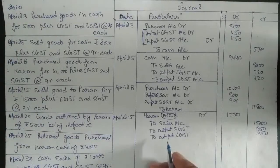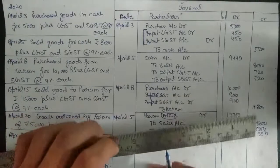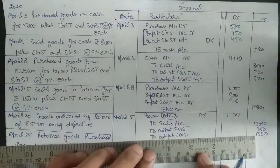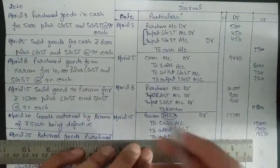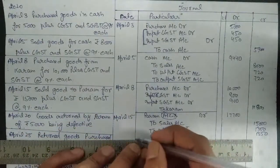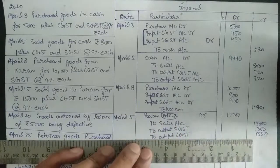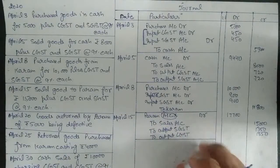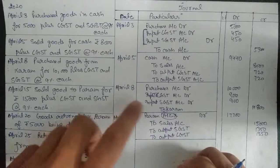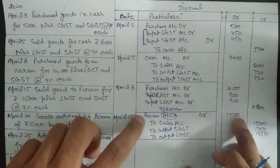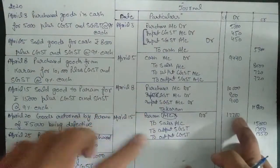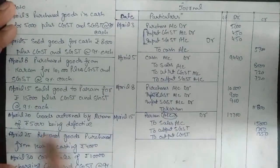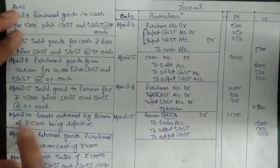This entry is similar to the April 8th entry — on April 8th we purchased goods on credit basis, and on April 15th we are selling goods on credit basis. But the GST charging is the same: in case of purchase we use 'Input' and in case of sale we use 'Output'. The next entry is April 20th.